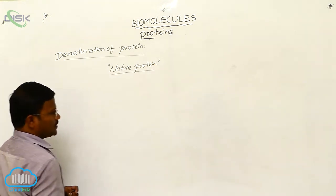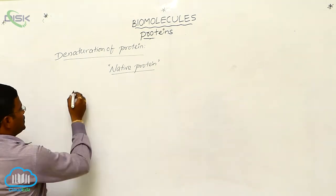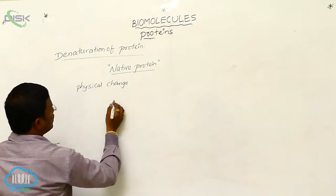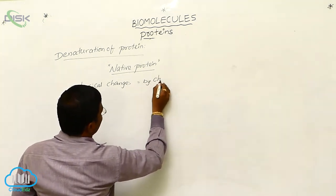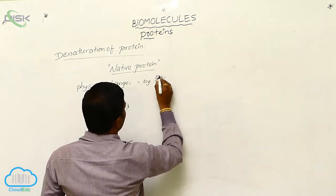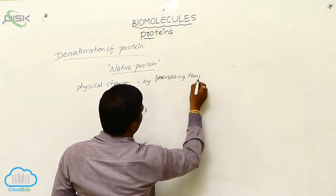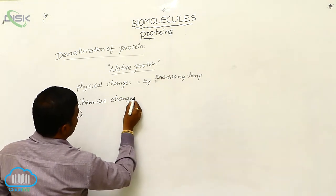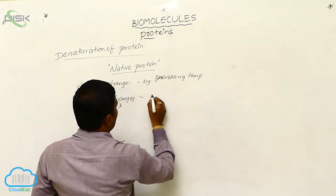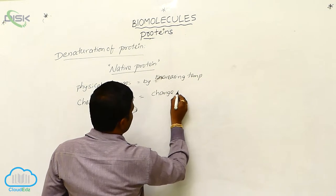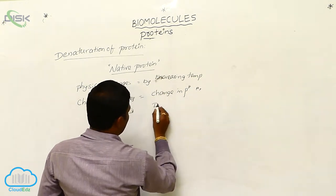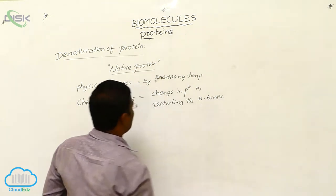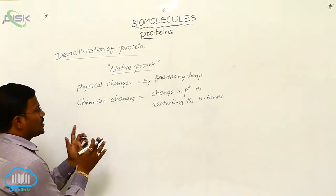When we apply physical or chemical changes onto proteins — such as increasing temperature, changing pH, or disturbing the hydrogen bonds within the protein — we can change the aspects of the protein structure.